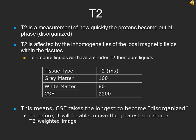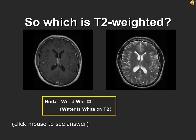T2 is a measurement of how quickly the protons become out of phase or disorganized. T2 is dependent on the inhomogeneities of the local magnetic field within the tissue. Thus, impure mediums will have a shorter T2. Using this knowledge, we can figure out that CSF, which is a very pure liquid, will have a long T2, while gray and white matter, which are made up of a variety of different cells, will have a shorter T2. Thus, when looking at a T2 weighted image of the brain, CSF should have the greatest signal because it is the most organized at any given time, since it takes the longest to become disorganized.